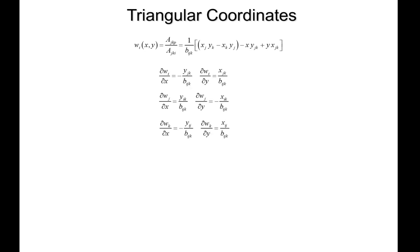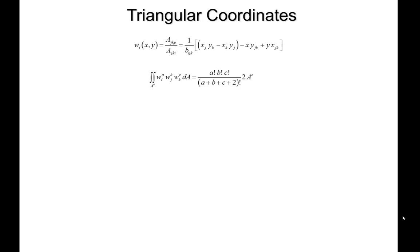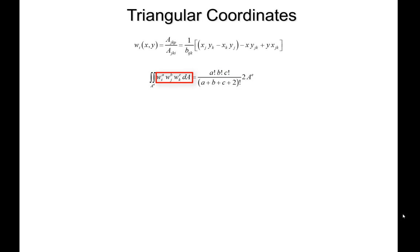We need to take derivatives and integrate this function. Taking the derivative is straightforward: the derivative of wi with respect to x is minus yjk over bijk, and similarly for y. The same approach gives derivatives for wj and wk. For integration, the general formula for integrating wi to the power a times wj to the power b times wk to the power c over the element is: a factorial times b factorial times c factorial, divided by a plus b plus c plus 2 factorial, multiplied by 2 times the area.